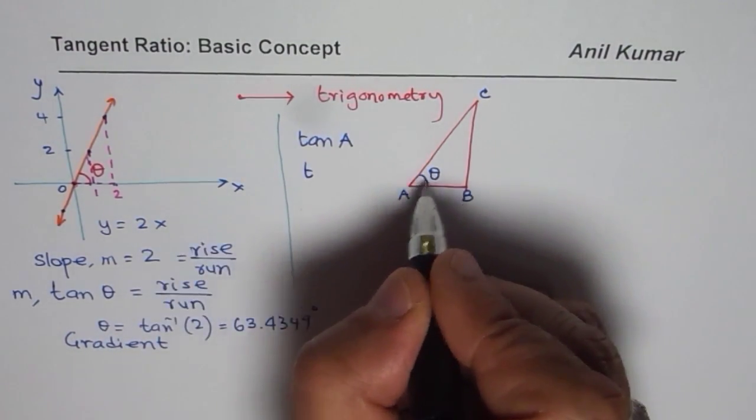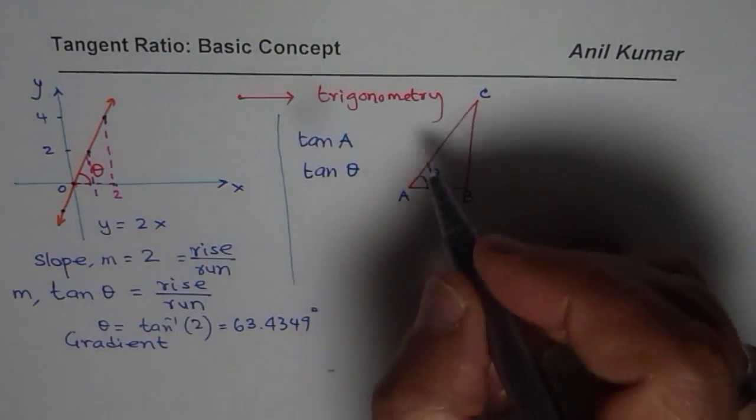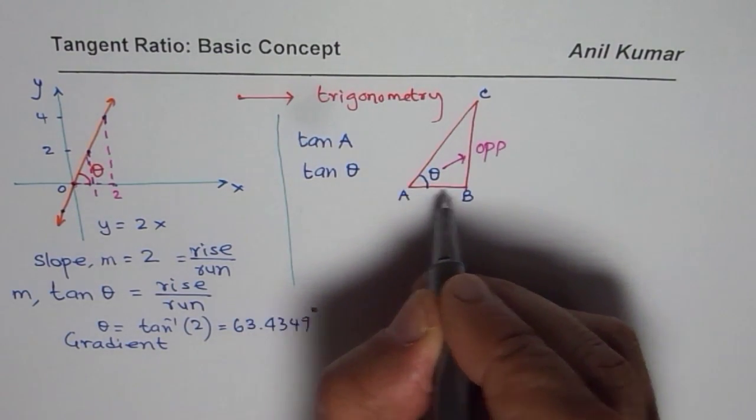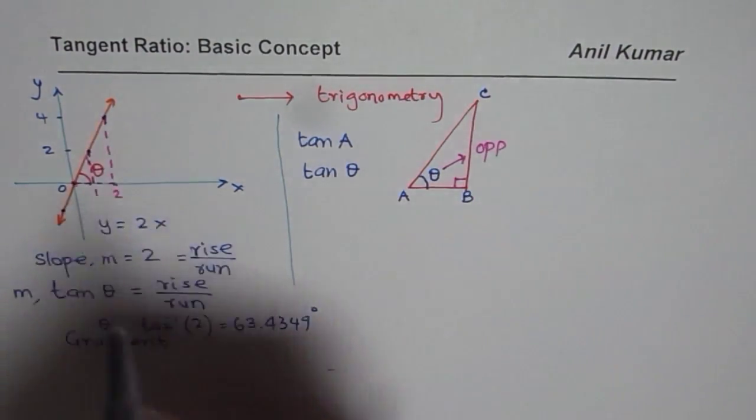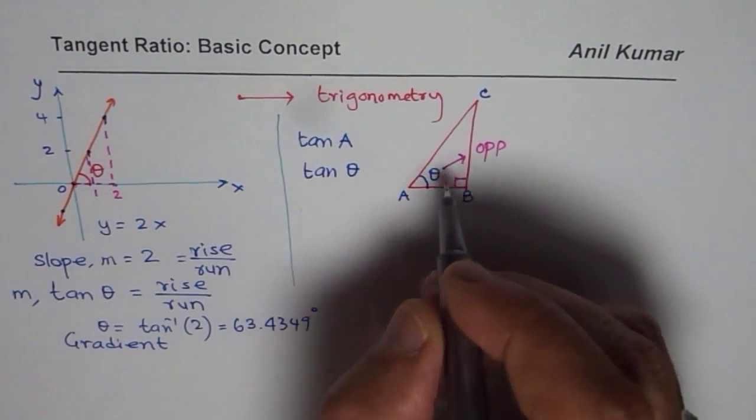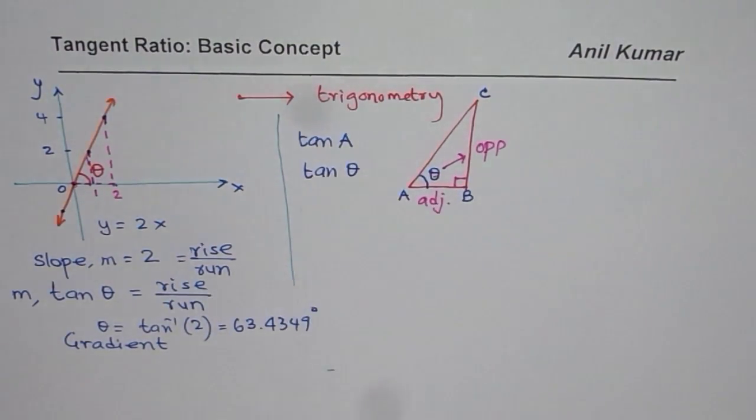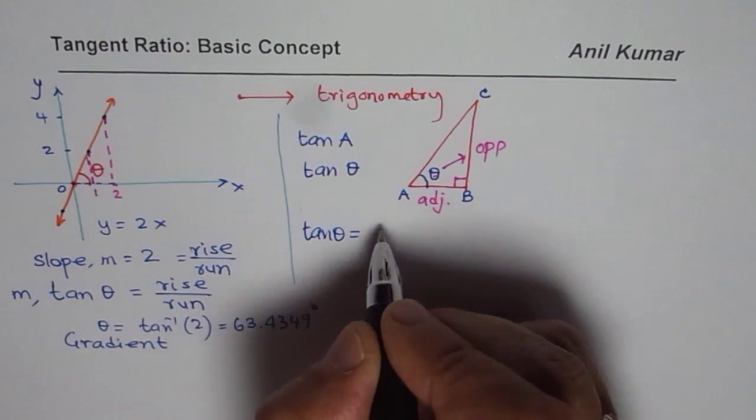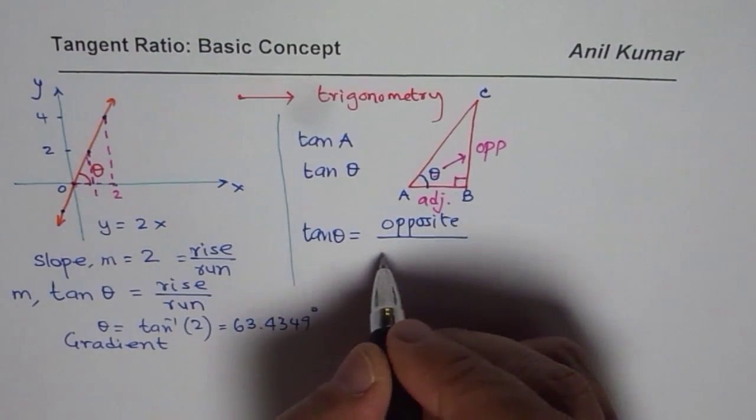Now since we know it is rise over run, we also refer to this as, with reference to angle theta, this is the opposite side. And we are also noticing one more thing that when we drop a perpendicular, we have a right triangle. So in the right triangle, we have one side which is opposite to the angle. The other one is adjacent. So this ratio, which we just now defined as rise over run, we can say tan theta is equals to opposite side length over adjacent side length.